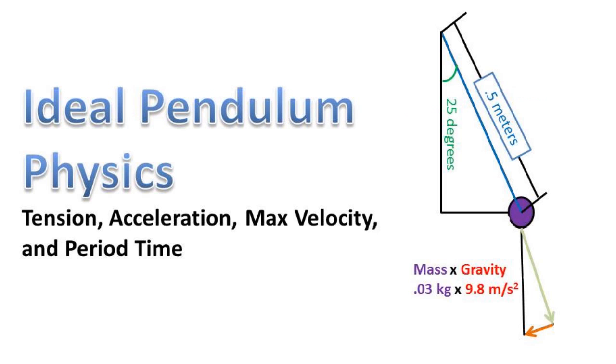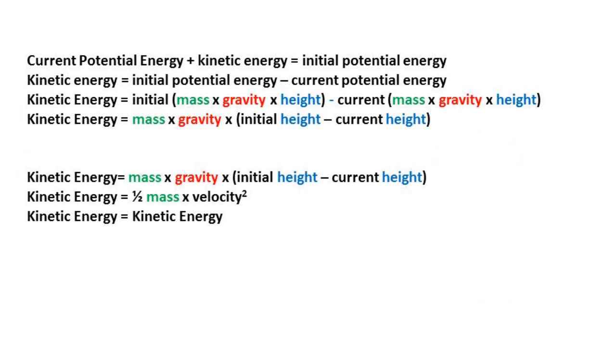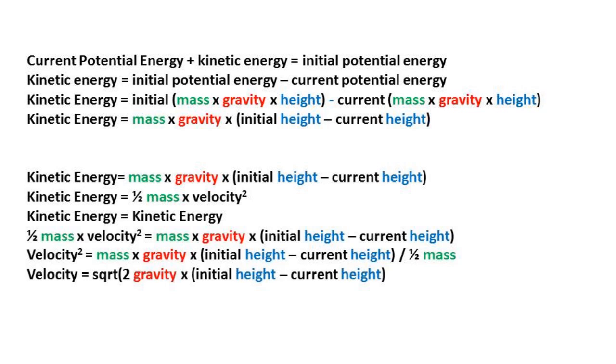We used this equation in a previous video for pendulums. Now, in order to solve for the velocity, we will set the two kinetic energy equations equal to one another and isolate the velocity to one side. After doing some simplification, we notice that the masses can be cancelled out. We are left with velocity equals the square root of two times gravity times the height delta.